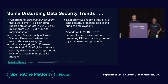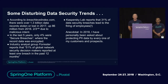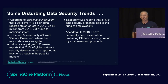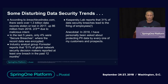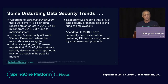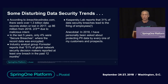Let's look at a few trends over the last few years. According to breachlevelindex.com, there were over 1.3 billion data records stolen in 2017, up 68 million on the year before. Two-thirds of those were with malicious intent. In the last five years, only 4% of breaches were secure breaches — cases where the data was encrypted and thus wasn't exposed even though it may have been stolen. Forrester Group reports that over half of global network security decision-makers reported at least one breach in the last 12 months, and Kaspersky Lab reports that 31% of data security breaches lead to the firing of employees.